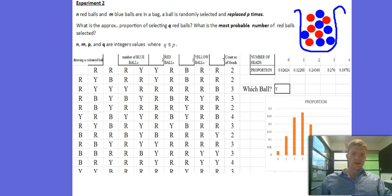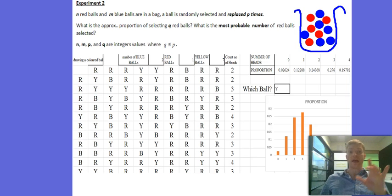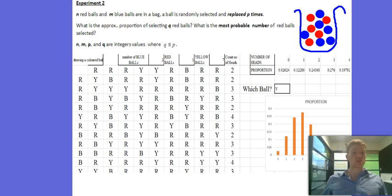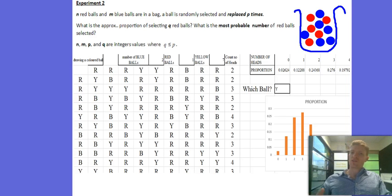Say we've got n number of red balls and m number of blue balls and they are all in a bag together. A ball is randomly selected and is replaced p number of times. With replacement is important because it's a different problem than if it was done without replacement. Without replacement is going to involve conditional probability but we're not ready to simulate that yet on Excel or Google Sheets. Once we've done our simulation, we can start asking ourselves questions such as what's the proportion of selecting Q number of red balls, or what's the most probable number of red balls selected.